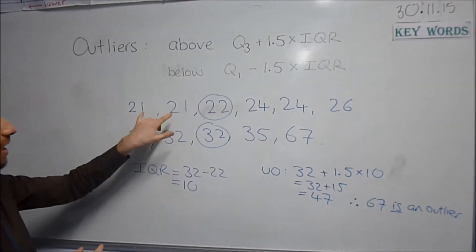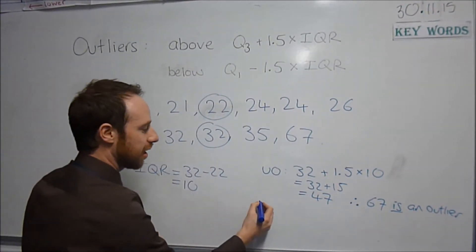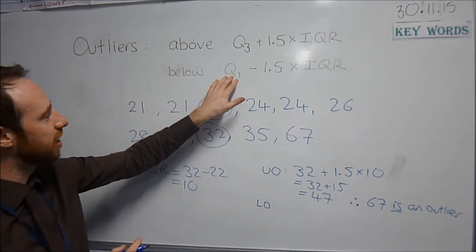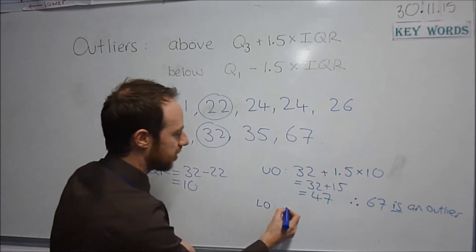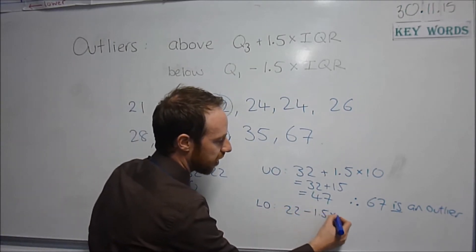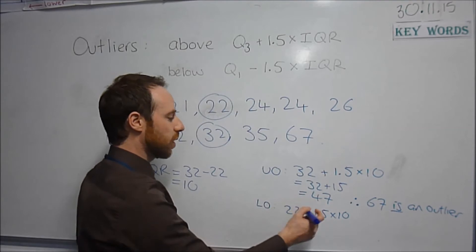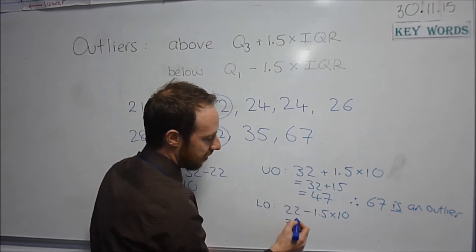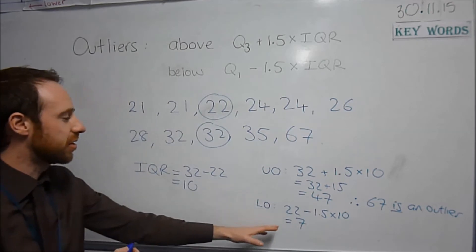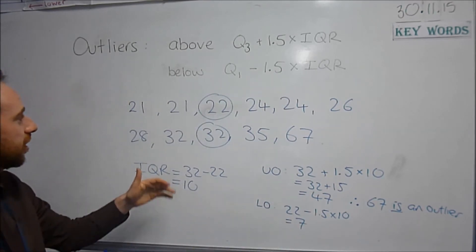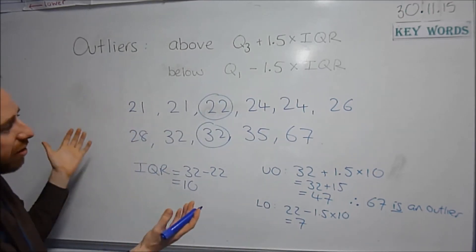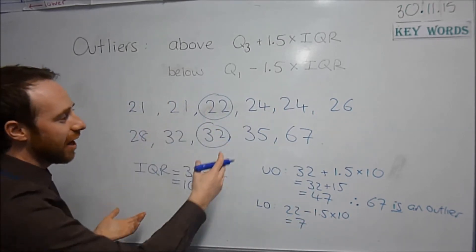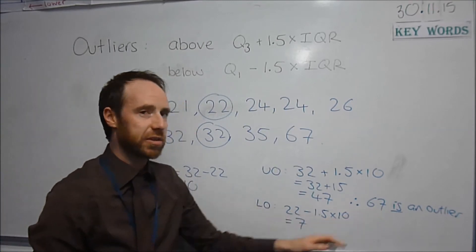Now let's check that there aren't outliers at the other end. For lower outliers, we take Q1 which is 22, and subtract 1.5 times the interquartile range — so 22 minus 15 is 7. Anything below 7 would be a lower outlier. Well, there isn't anything below 7, so there are no outliers at that end. The only outlier for this data is 67.